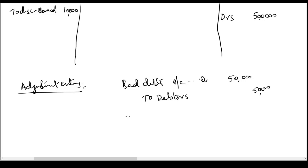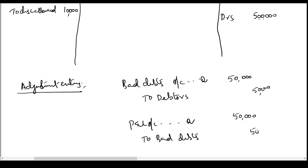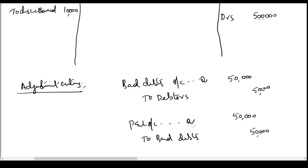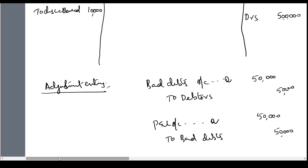We will pass one more entry to close bad debts — because bad debts is a loss, P&L account should be debited with the amount of bad debts. Entry two: P&L account debit, to bad debts — 50,000. So the posting is: P&L account is debited with bad debts 50,000. Bad debts account is debited and then credited, meaning bad debts account is closed and P&L account has been debited with the bad debts.